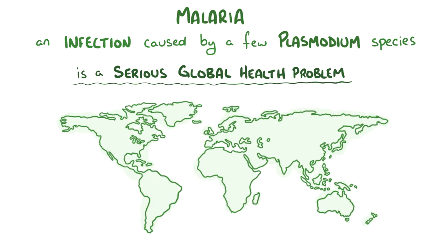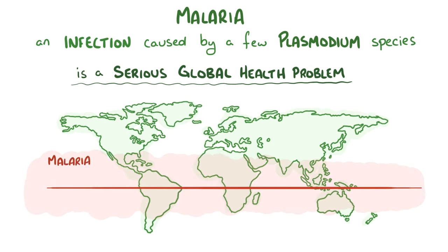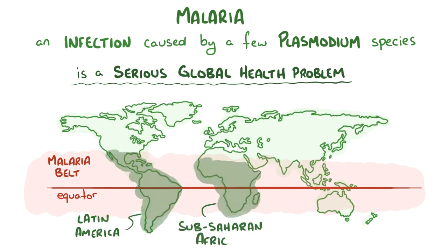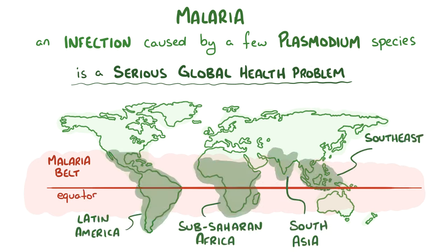Tropical and subtropical regions are hit the hardest. Together, the most affected regions form the malaria belt, which is a broad band around the equator that includes much of Latin America, Sub-Saharan Africa, South Asia, and Southeast Asia.